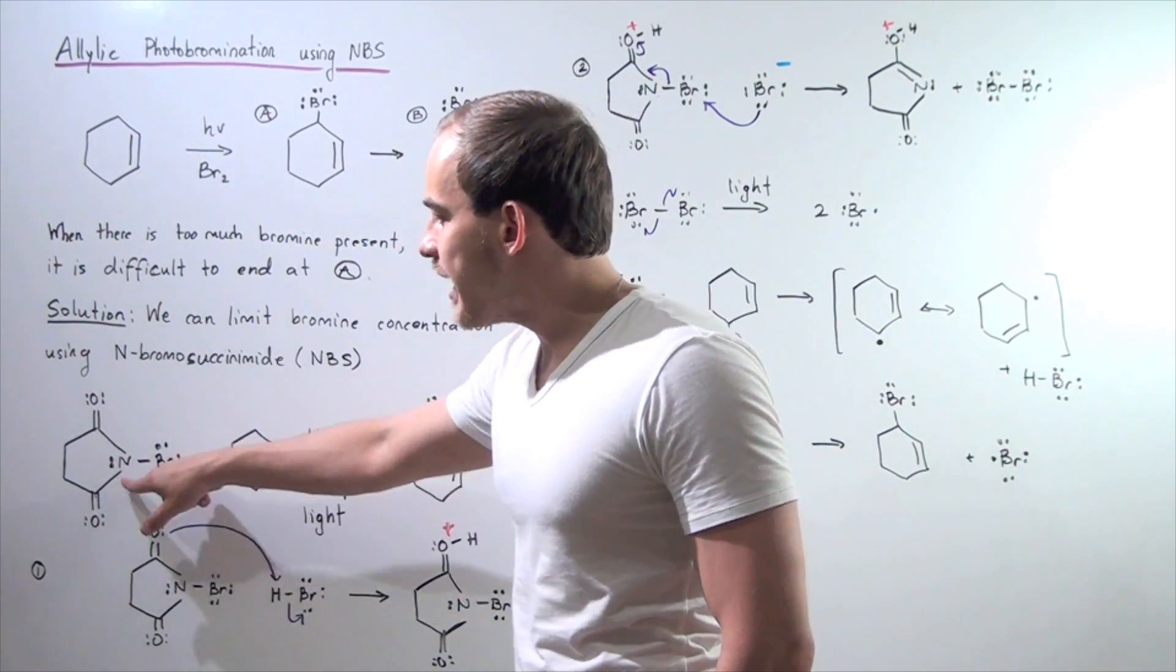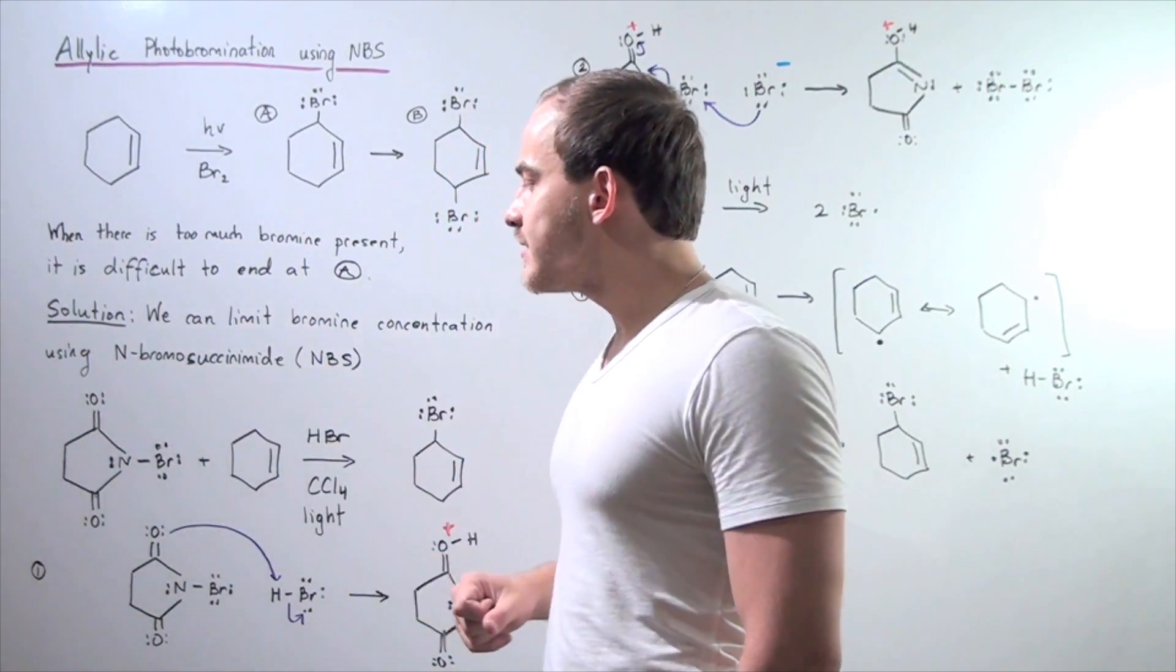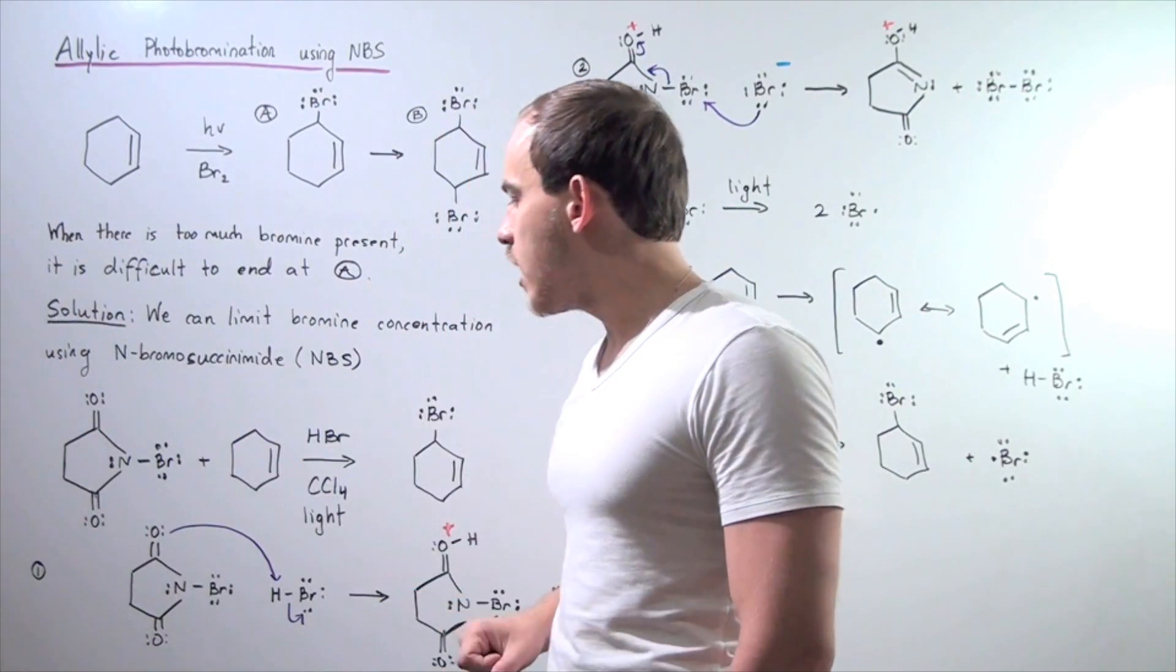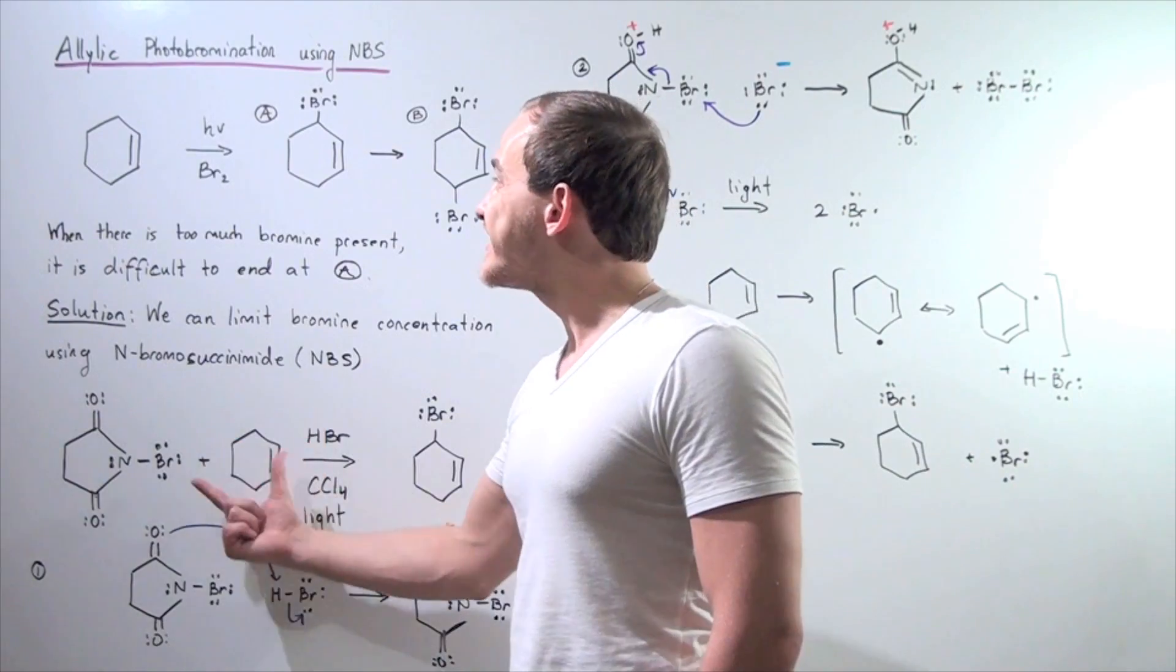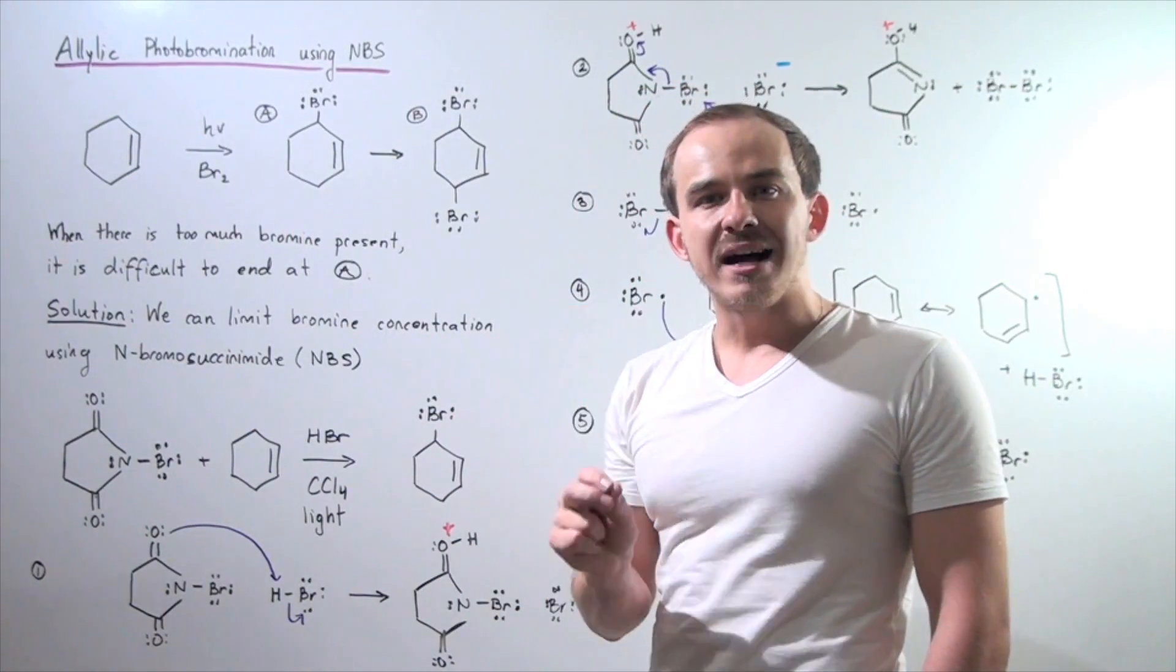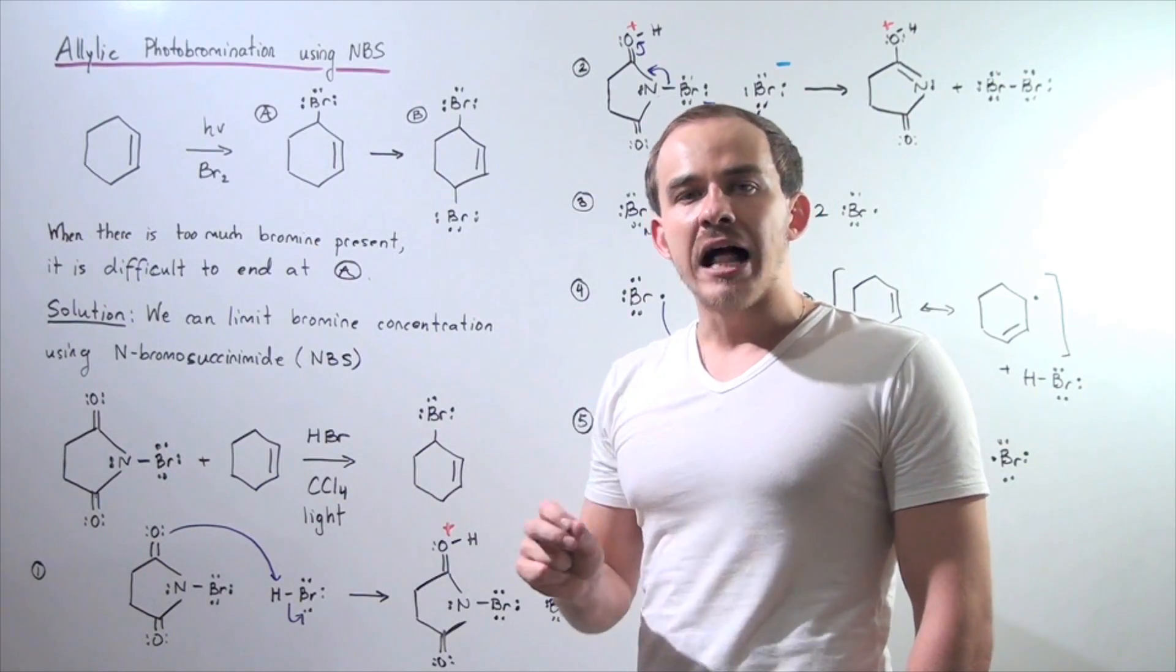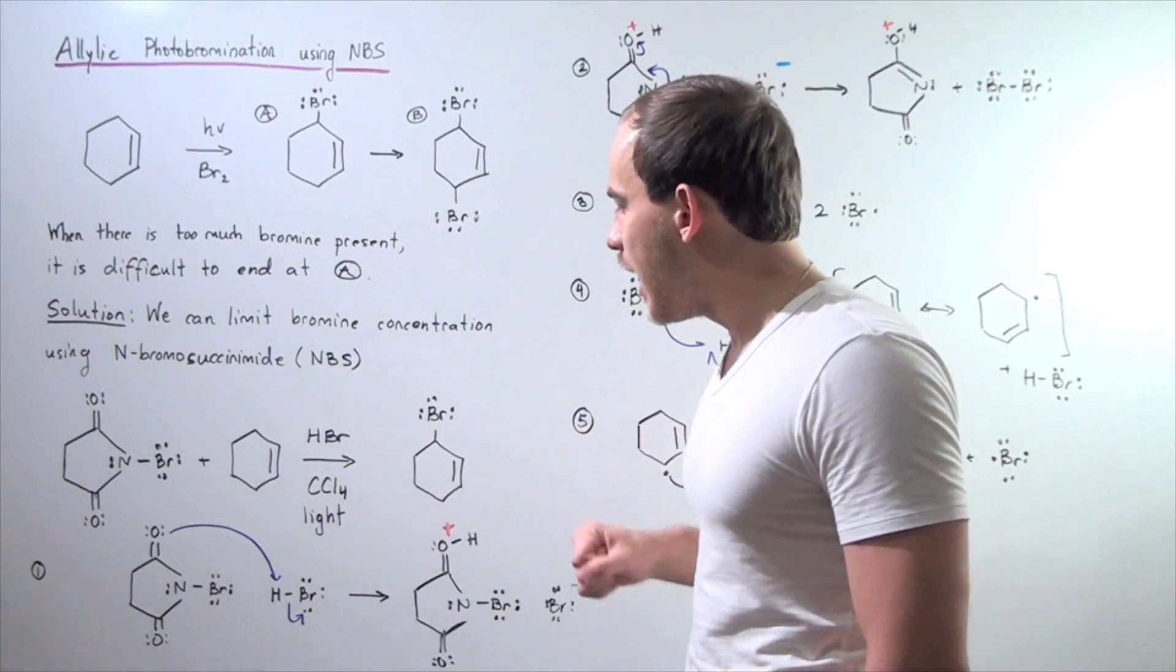We have a 5-member ring. We have the N attached to our bromide. We have two doubly bonded oxygens to carbons opposing one another. Let's suppose we take NBS and we mix it with our cyclohexene in the presence of trace amount of HBr in the solvent carbon tetrachloride and in the presence of light.